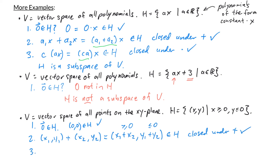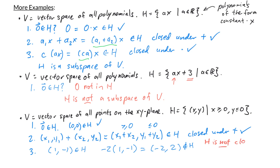For the third condition, is H closed under scalar multiplication? The answer is no. For example, the point (1, −1) is in H. If I multiply by scalar −2, I get (−2, 2), which has a negative first coordinate and a positive second coordinate, so this point is not in H. H is not closed under scalar multiplication, so H is not a subspace of V.